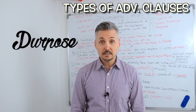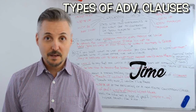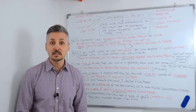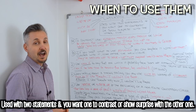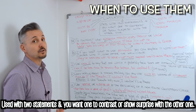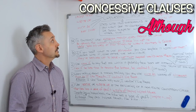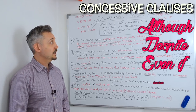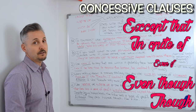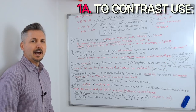The eight types are: conditional, purpose, reason, result, place, manner, time, and concessive clauses. If you wish to watch a lesson on time clauses, you can click here. Concessive clauses are used when you have two statements and you want one to contrast or show surprise with the other one. Some concessive clauses are: although, despite, even if, even though, though, except that, in spite of, much as, not that, etc. Let's look at how to use them.